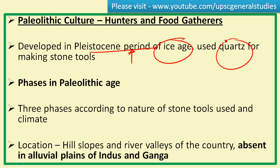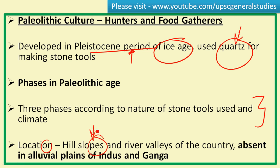In this period the people used quartz stone for making stone tools — this is important from a prelims point of view. The Paleolithic culture can be divided into three important phases, divided according to the nature of stone tools used and the climatic conditions of that period. The locations of Paleolithic culture are on the slopes of hills, because abundant stone tools were available there.